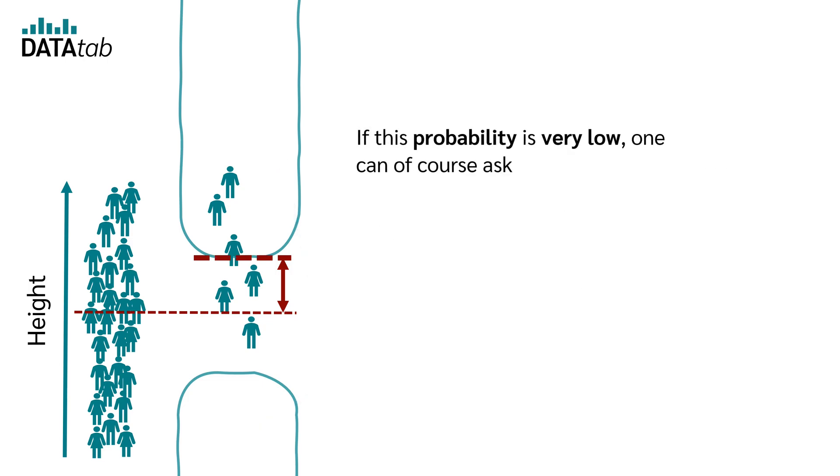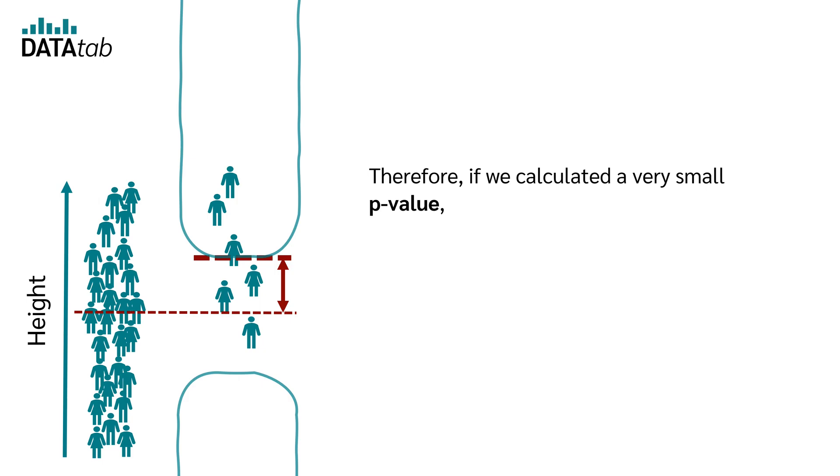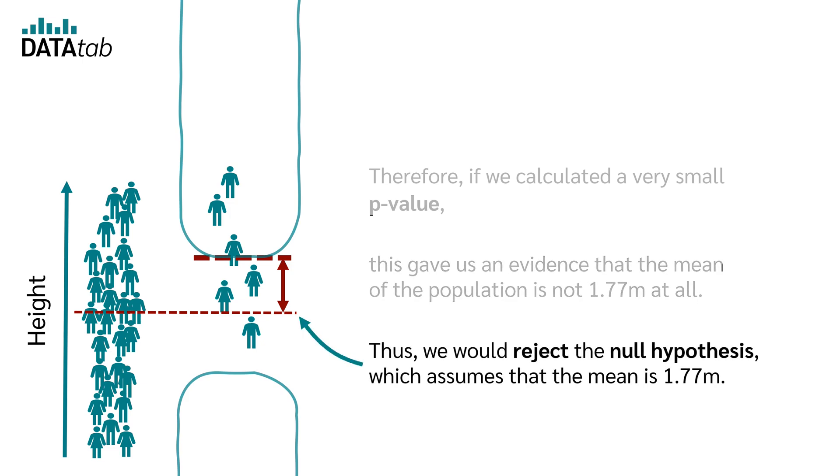If this probability is very low, one can of course ask whether the sample comes from a population with a mean of 1.77 meters at all. It is just a hypothesis that the mean value of basketball players is 1.77 meters, and it is precisely this hypothesis that we want to test. Therefore, if we calculated a very small p-value, this gave us evidence that the mean of the population is not 1.77 meters at all. Thus, we would reject the null hypothesis, which assumes that the mean is 1.77 meters.